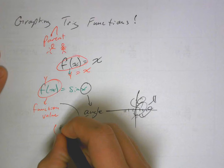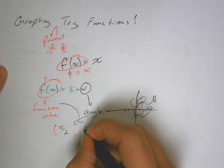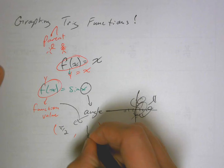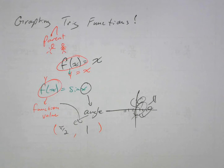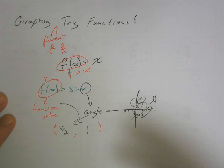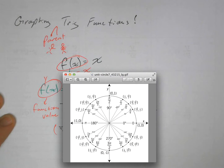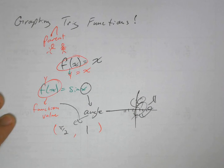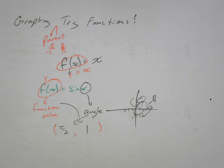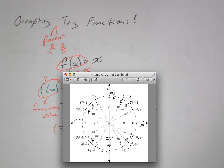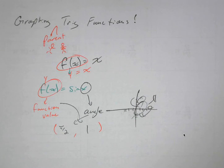So we could have the point (π/2, 1), because sine of π/2 is your y value. On the unit circle, your angle is π/2 and your sine is your y value which is 1. So on the Cartesian plane we would have the point (π/2, 1).